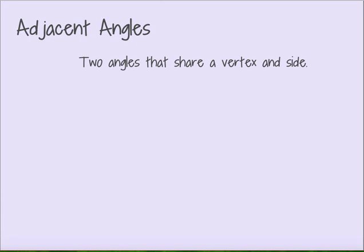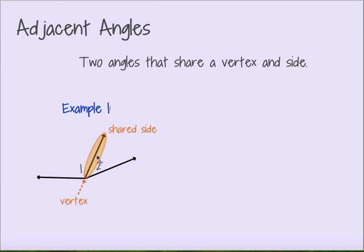Next, let's talk about adjacent angles. Adjacent angles are any two angles that share a vertex and a side. Here I have two angles, angles 1 and 2. Both angles come to a single point called the vertex. The rays shooting out from that vertex are called the sides. Here we have one ray that's common to both angle 1 and angle 2, and we're going to call that the shared side. That makes these two angles adjacent.